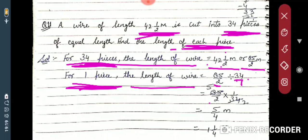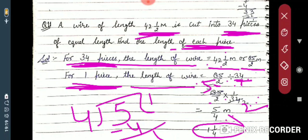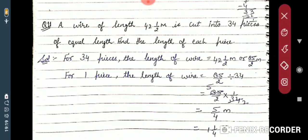So: 85/2 divided by 34. Division changes to multiplication by the reciprocal, so 85/2 multiplied by 1/34. Now 17 twos are 34 and 17 fives are 85, so you get 5/2 multiplied by 1/2 equals 5/4. Converting to mixed fraction: 1 whole 1/4 meter. So the length of each piece is 1 and 1/4 meters.